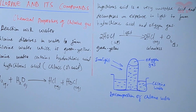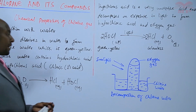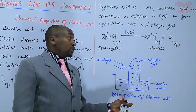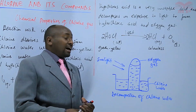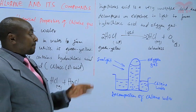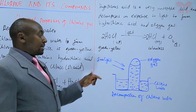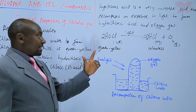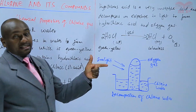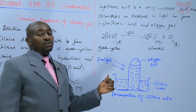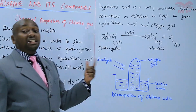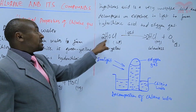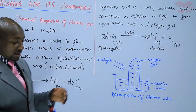Chlorine water is a bleaching agent. When you put a blue litmus paper into chlorine water, it turns red and then white. It turns red as an indication of acidity, and then white because of bleaching — that bleaching is as a result of hypochlorous acid.